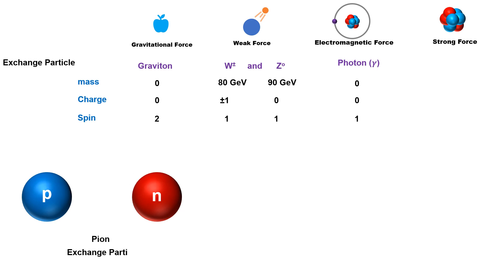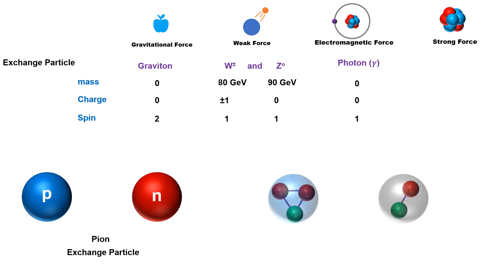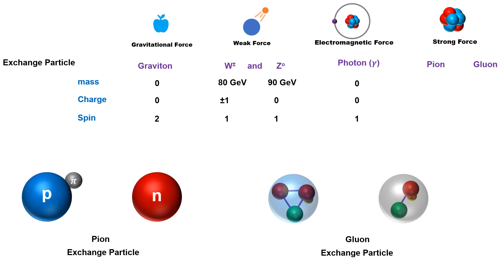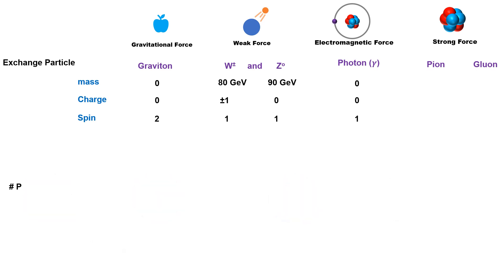Between two nucleons, the pion acts like an exchange particle. Due to the exchange of this pion, protons and neutrons experience strong force. But proton, neutron, and pion are made of quarks. The gluon acts like an exchange particle between two quarks. Due to the exchange of gluon, two quarks experience strong force. That means strong force works in two different ways: one between nucleons with the exchange of pion, and another between quarks with the exchange of gluons. The mechanism of strong force is completely different in both cases. But strictly speaking, the quanta of strong force is the gluon, because pion itself is made of quarks and the strong force between quarks is due to the gluon.